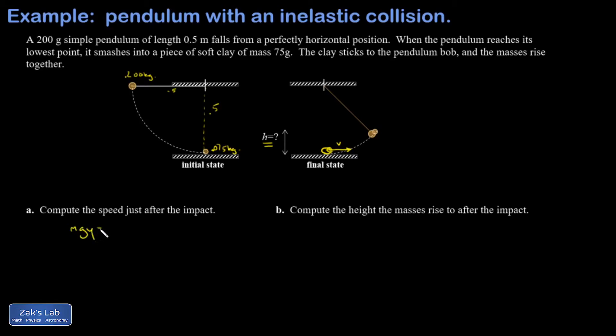And I'm going to say mgy, that's the original gravitational potential energy, assuming y equals 0 is at the floor, is equal to 1/2 mv squared. The m's actually cancel out. So I get the speed just before the impact is the square root of 2gy.